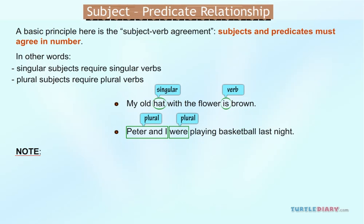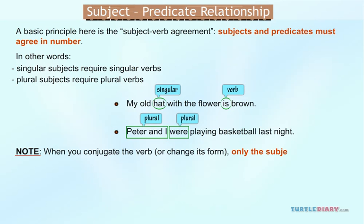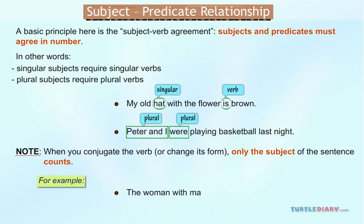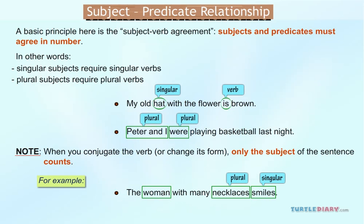Note: when you conjugate the verb, or change its form, only the subject of the sentence counts. For example, 'The woman with many necklaces smiles.' Here, even though the noun 'necklaces' is plural, the verb 'smiles' is singular because the subject 'woman' is singular.